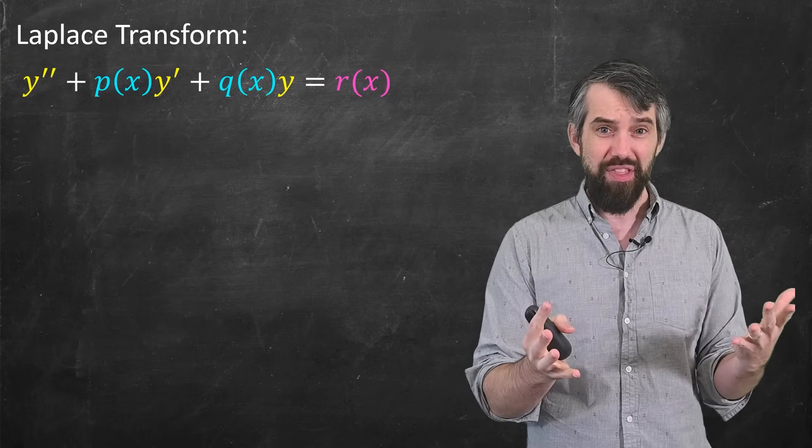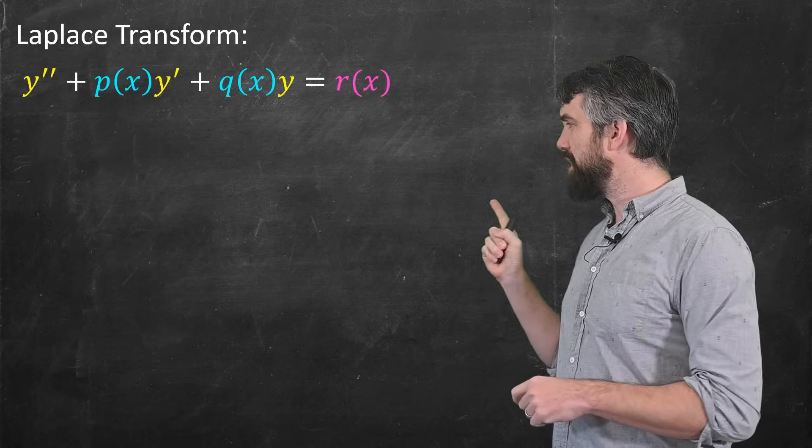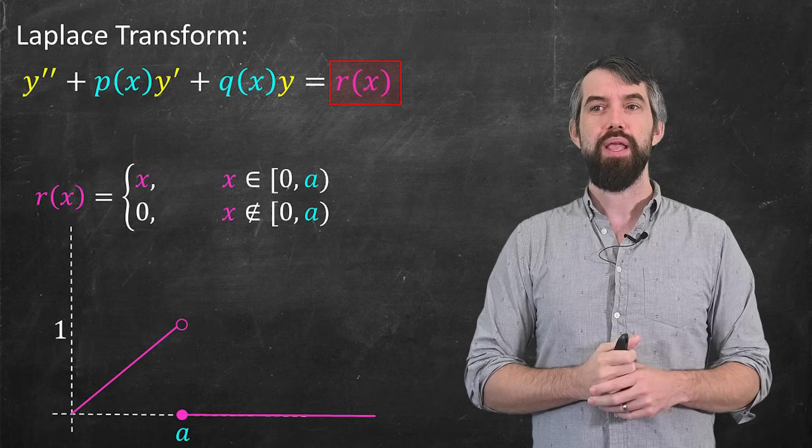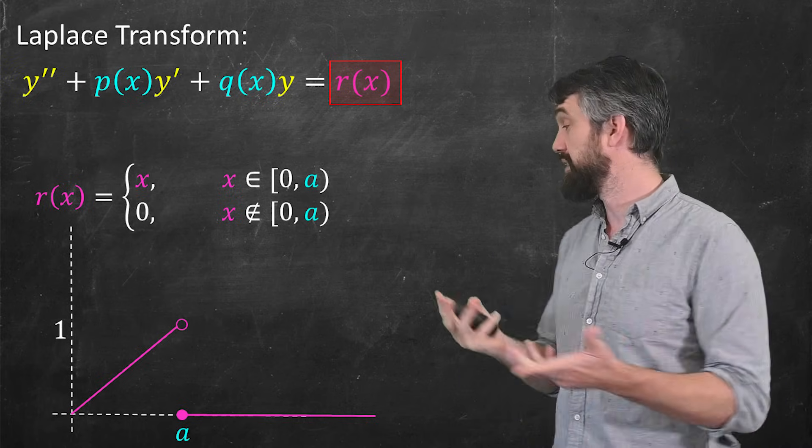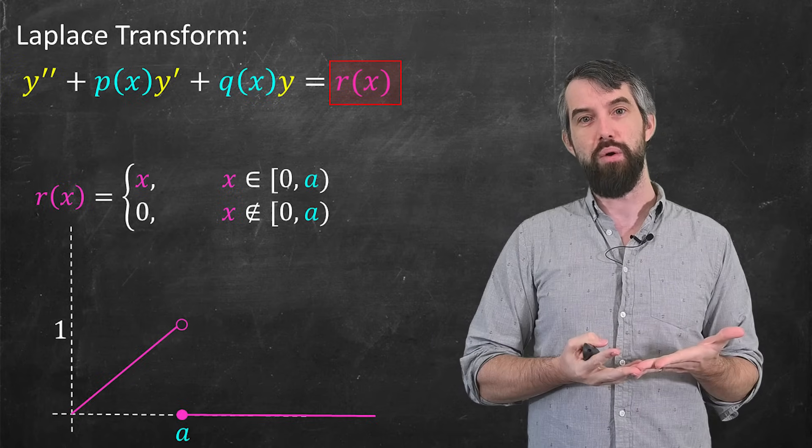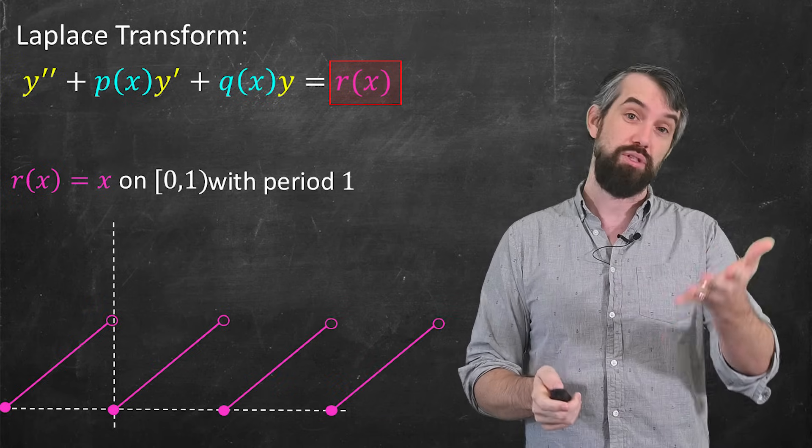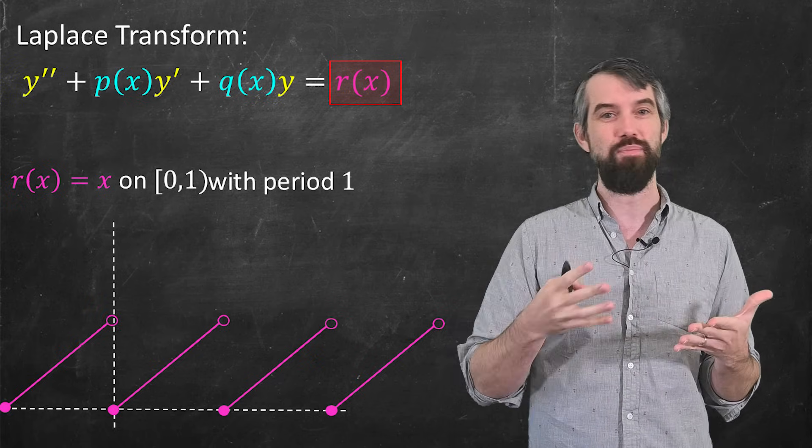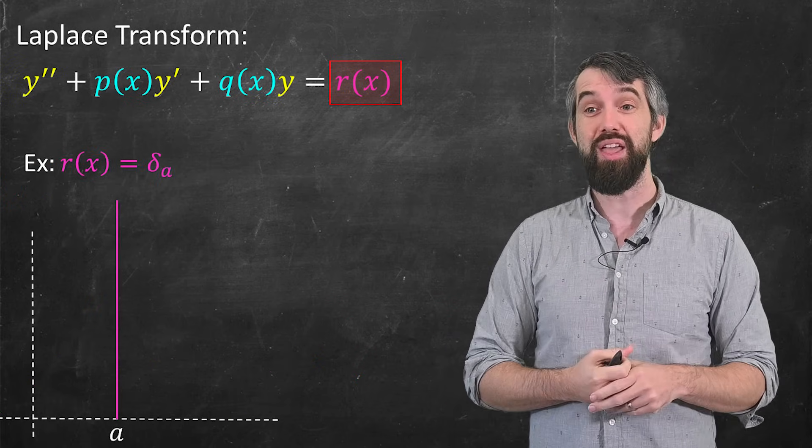One big class of things that's not on that undetermined coefficient list is when the r of x is weird. Like for example, suppose this r of x here is discontinuous. Like this is a function that goes up for a bunch, but then it drops back down to zero. Undetermined coefficients can't deal with any of these discontinuous functions. It also might be sort of discontinuous in a periodic way. Like it keeps on repeating the same pattern over and over and over again.